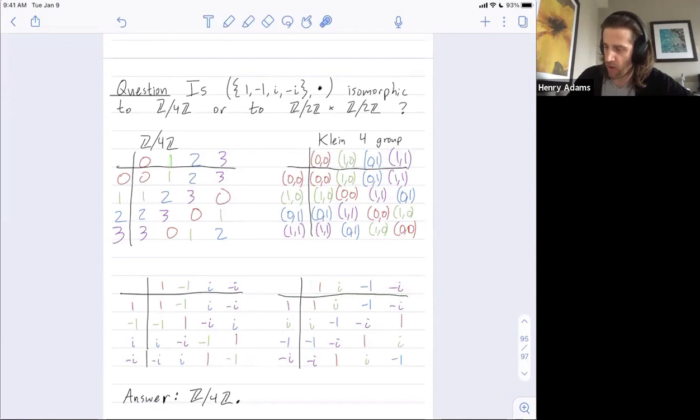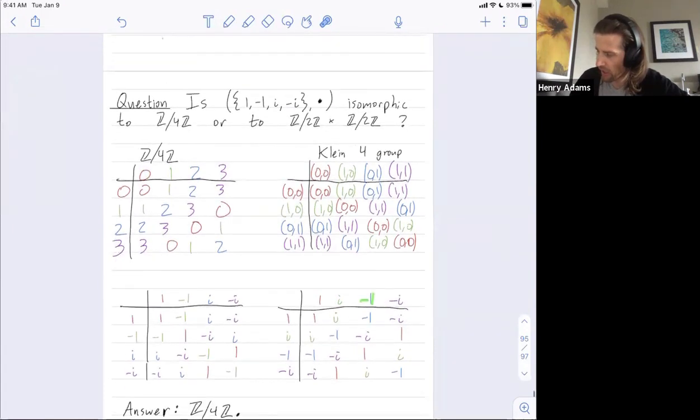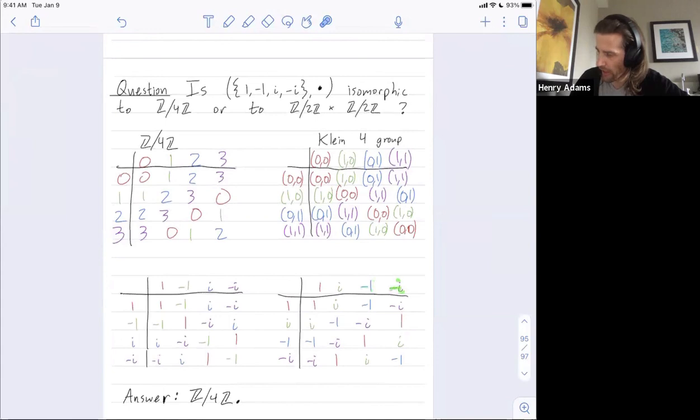One combined with itself. One plus one is two. One plus one plus one is three. And if I take quote unquote zero copies of one, I get the additive identity zero. In the same way, i generates this group. i squared is negative one. i cubed is negative i. And i combined with itself zero times is the multiplicative identity one.